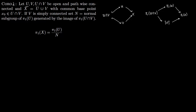Let U, V, and U∩V be open pathwise connected, and X be the union of U and V with a common base point. If V is simply connected, then set N as the normal subgroup of π₁(U) generated by the image of π₁(U∩V). Diagrammatically, since V is simply connected it becomes a trivial group, so π₁(X) = π₁(U)/N, where N is generated by the image of π₁(U∩V) in π₁(U).